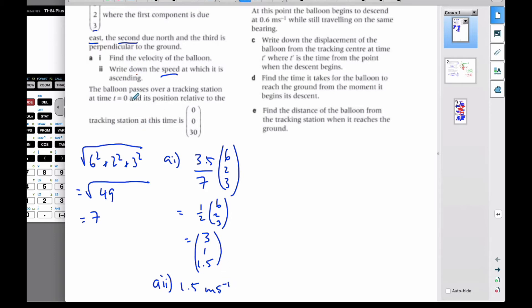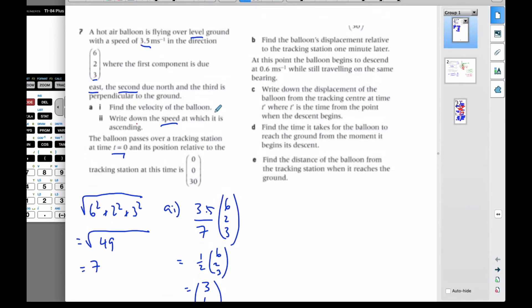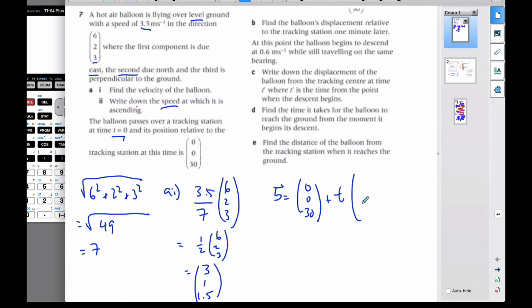Now, the balloon passes over a tracking station at time t equals 0, when its position relative to the tracking station is (0, 0, 30). Find the balloon's displacement one minute later. The balloon position vector b is at (0, 0, 30) plus t times the velocity vector (3, 1, 1.5).